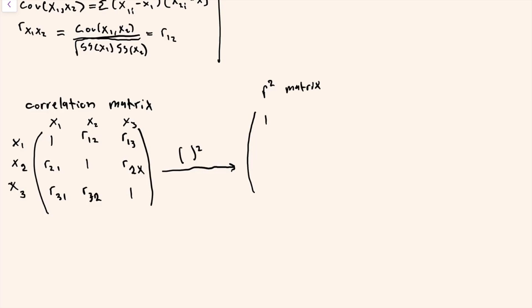This one I'll call the r-squared matrix. You still have one along the diagonals, but now the values represent the proportion of variation explained: r-squared 2-1, r-squared 3-1, r-squared 3-2, r-squared 1-2, r-squared 1-3, and r-squared 2-3.